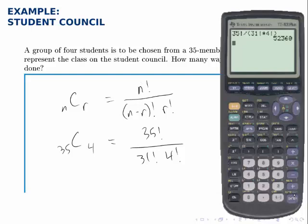And we get 52,360 ways to select this group of four students.